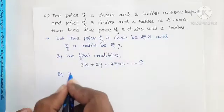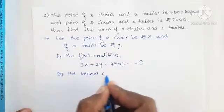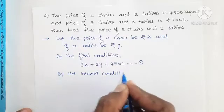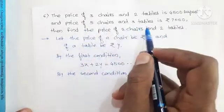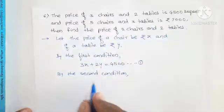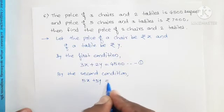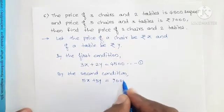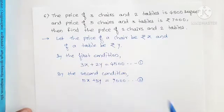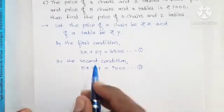By the second condition, the price of 5 chairs and 3 tables is Rs. 7,000. Therefore 5x plus 3y equals 7,000. Here we have got these two equations. The coefficients of neither x nor y are the same, so we need to multiply to make one coefficient equal.